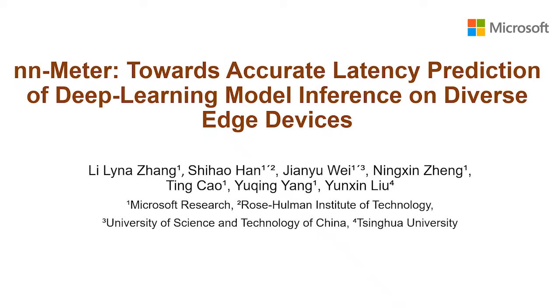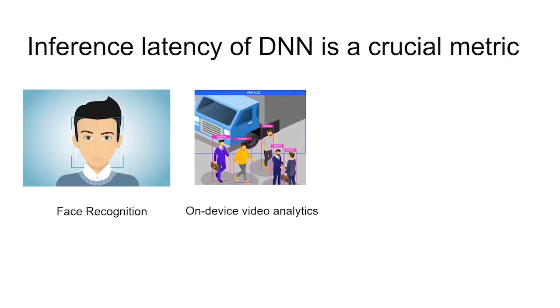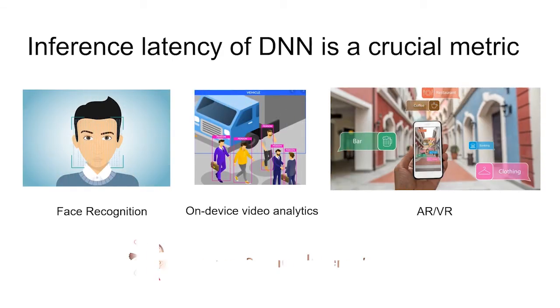NN Meter is an efficient system that can predict the DNN inference latency on diverse edge devices. DNNs have been widely used in today's mobile applications. They have the strong need of fast speed. Inference latency then has become a crucial metric in running DNN on various edge devices.